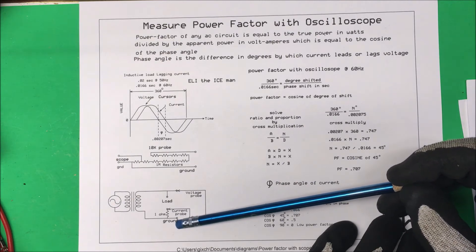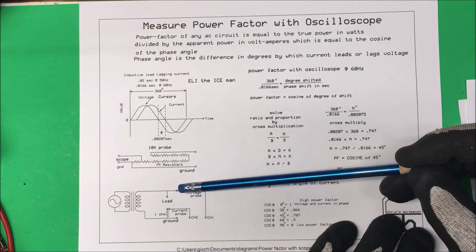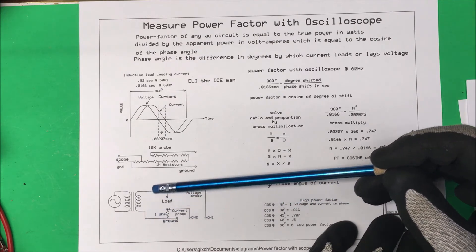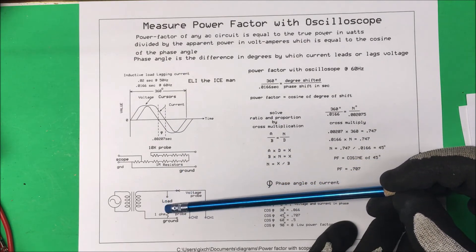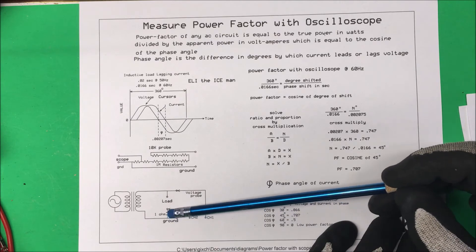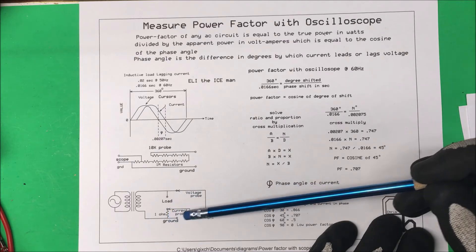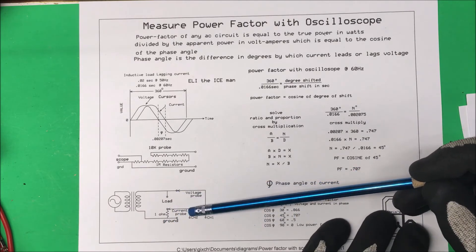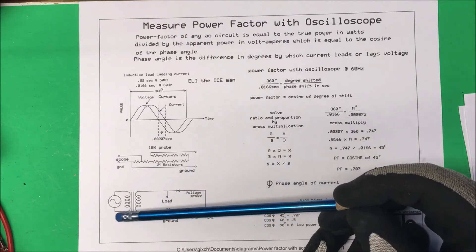So we use an isolation transformer to create a floating ground. The load is connected across the transformer output. The voltage probe measures across the load between two points to get the voltage sine wave. In series with the load, we add a 1-ohm resistor, and the second probe measures the voltage drop across that resistor, which corresponds to the current through the load. This setup is safe because of the isolation transformer.